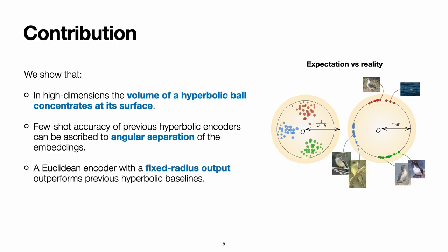Then, we show that the few-shot accuracy of previous hyperbolic encoders can actually be attributed to the angular separation of the embeddings. And finally, we show that a Euclidean encoder equipped with the Euclidean metric can actually surpass the performance of previous hyperbolic baselines.